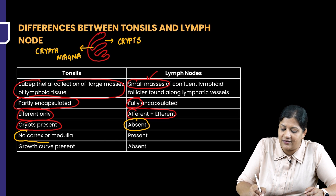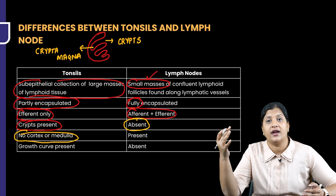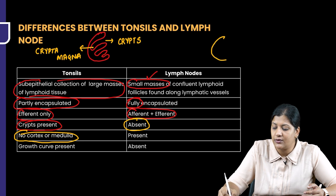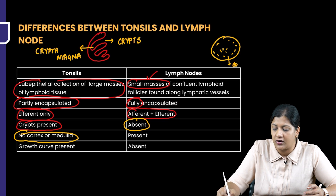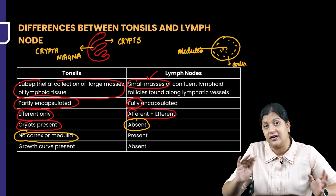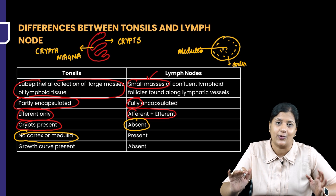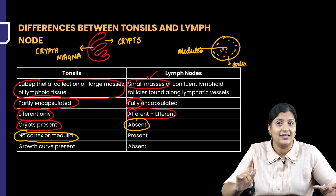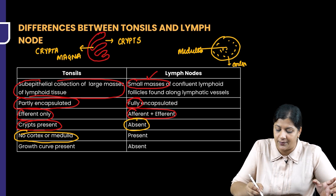In a tonsil, we don't have a typical cortex and a medulla, whereas a lymph node will have an outer cortex and an inner medulla. So, we will have a cortex on the outside and the medulla on the inside in a lymph node. But tonsil will not have a cortex and a medulla.